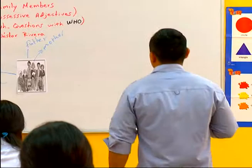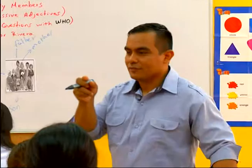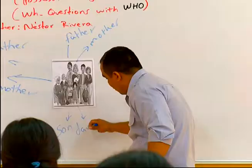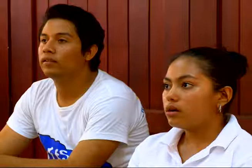Then we have son. Son significa hijo. Lo opuesto sería daughter. Daughter. Hija. Fácil en español. Daughter.